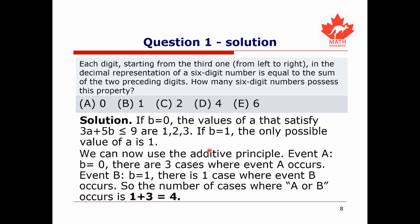Using the additive principle — calling event A the case where B equals 0 (three cases) and event B the case where B equals 1 (one case) — the total number of cases where A or B occurs is 3 plus 1 equals 4. So the answer to our question is D.